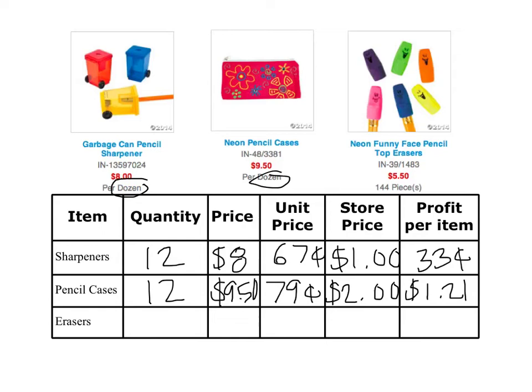And then lastly, the erasers. There are 144 in a pack at $5.50 for the package. When I divide that, I get 0.03819 — that's about $0.04 each. Pretty good price. I thought $0.10 would probably be the ideal price, but most people, if they really want it, would pay a quarter anyway, so I'm going to charge $0.25. Maybe I could do some sort of deal later and say 5 for $1. But right now, that's a profit of $0.21 each.